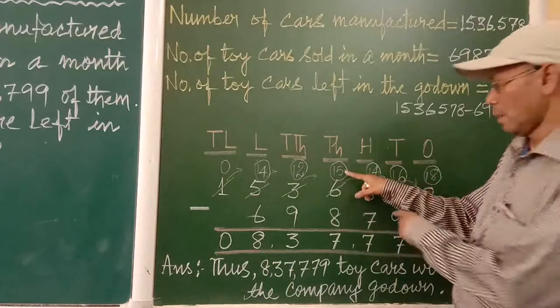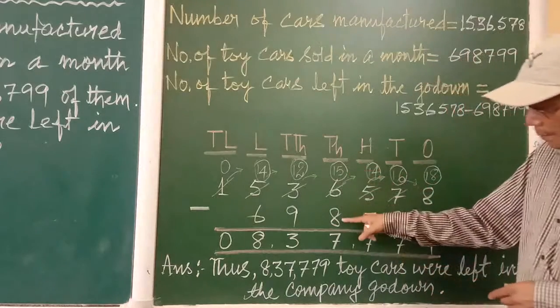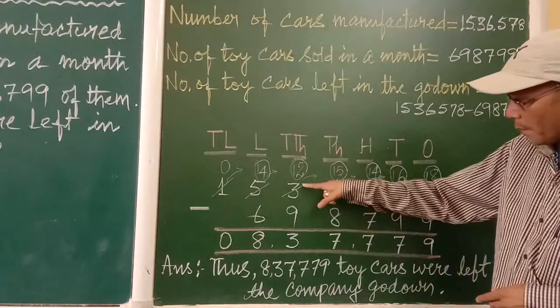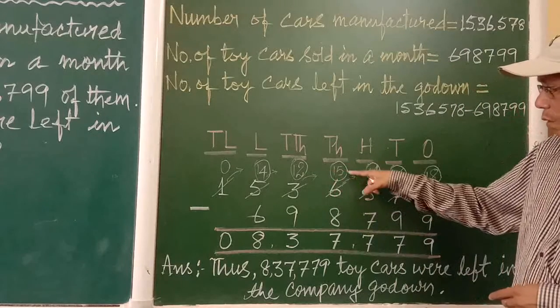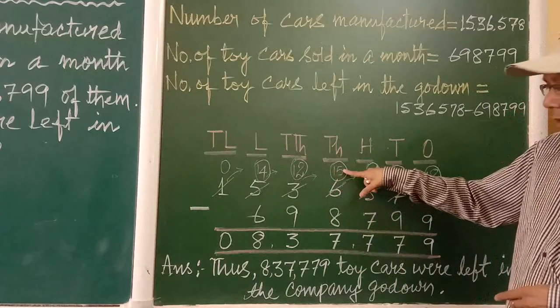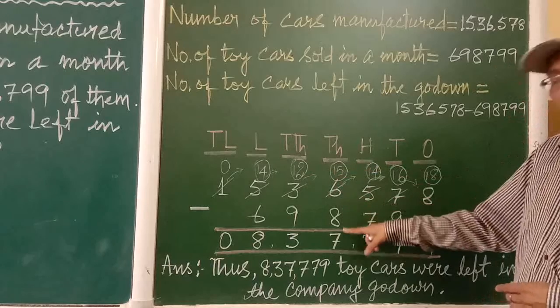Previously it was 6, one is gone here, so now it is 5. From 5 we won't be able to subtract 8, so we have to carry from here. So it will become 15. 15 minus 8 is 7.